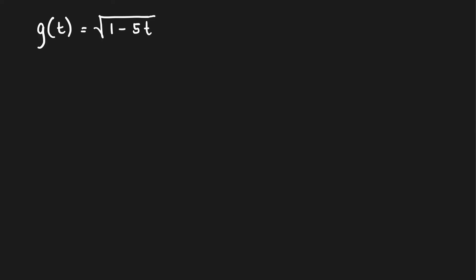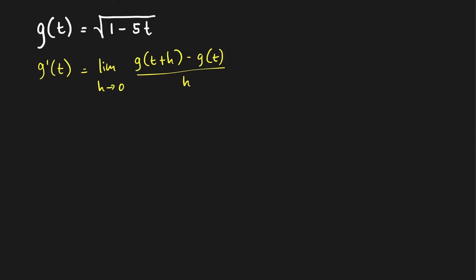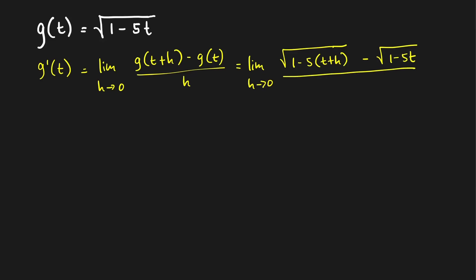Let's move to the second function. So g prime of t is the limit as h approaches 0 of the difference quotient: g of t plus h minus g of t, all over h. This equals the limit as h approaches 0 of the square root of 1 minus 5 times (t plus h) — use a grouping symbol — minus the square root of 1 minus 5t, all over h. The limit is in the form 0 over 0. If you have a radical, one way to find the limit is to first rationalize the numerator by multiplying by its conjugate.